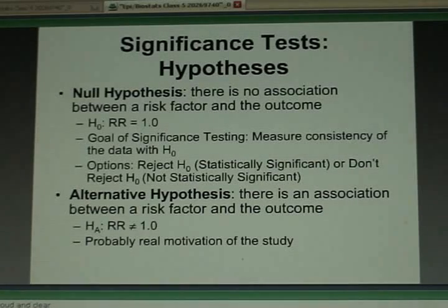So the null hypothesis says the true risk ratio is one. The true odds ratio is one. The true risk difference should be zero. In other words, no association. The people who get the risk factor and the people who don't get the risk factor have the same risk of developing your outcome.